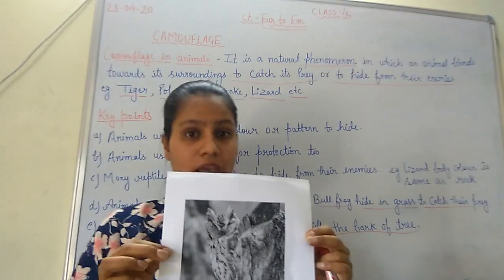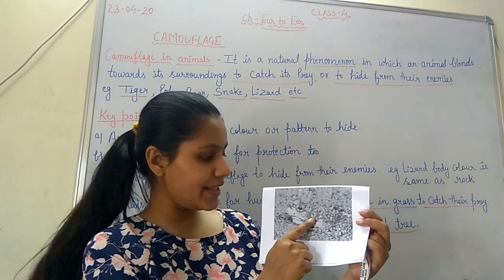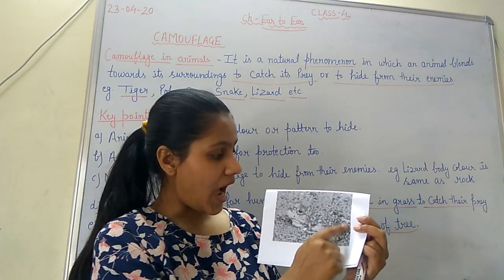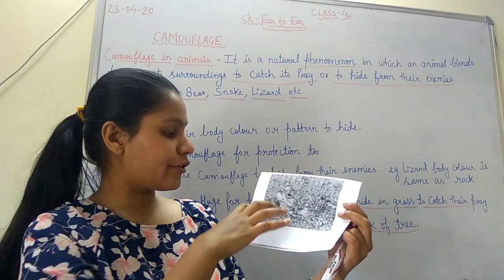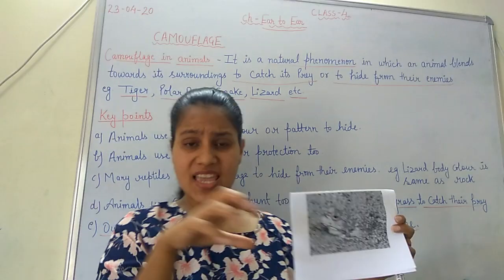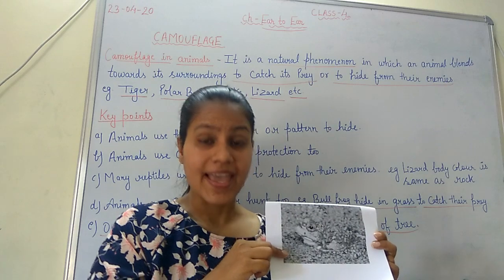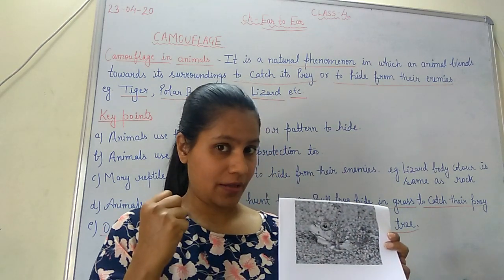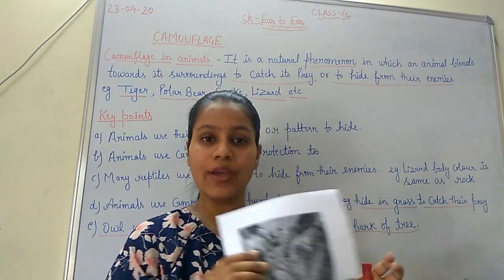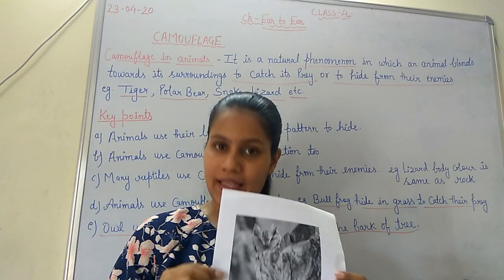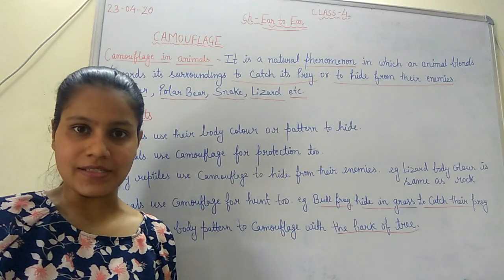One more example is the bullfrog — it is green in color and hides near algae, plants, or grasses, waiting for its prey and then catching it. This is camouflage in animals. I hope you all understand the topic of camouflage in animals.